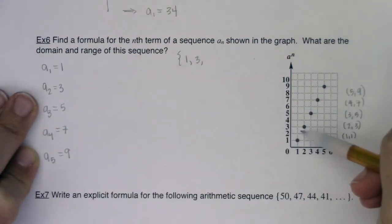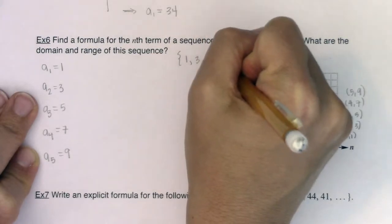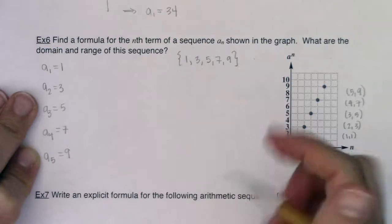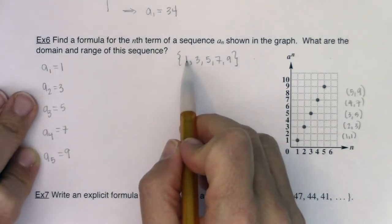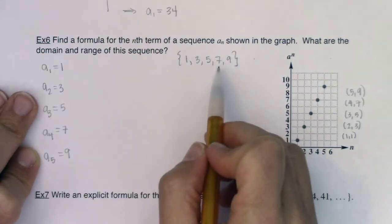If we look, the first, second, third, fourth, fifth terms are respectively 1, 3, 5, 7, 9. Now when I look at that sequence, I can identify that it is arithmetic because I see that I'm adding a common difference to get from term to term.